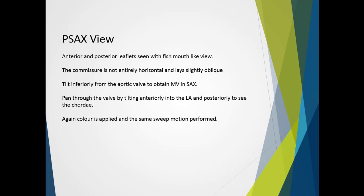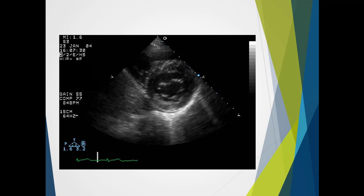The parasternal short axis view shows the anterior and posterior leaflets with a fish mouth-like appearance in diastole. The commissure is not entirely horizontal and lies slightly oblique, at around the 2 o'clock and 8 o'clock positions. This view is best obtained by getting the aortic view in the parasternal short axis window and then tilting down and inferiorly. The sonographer must pan through the valve by tilting anteriorly into the left atrium and posteriorly down to see the chordae. Colour is applied with the same sweeping motion. Here we can see the commissure line is slightly oblique, with the anterior and posterior leaflets visible.